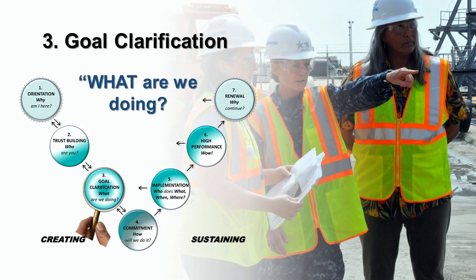Step 3: Goal Clarification. In Step 3, people ask, 'What are we doing?' which is a more specific question than the larger purpose question asked during orientation. During this stage of a team's life, clear understanding of the job is required, as well as agreements about goals and specific deliverables. Team members need to identify both the long and short-term goals of an organization and what they are trying to achieve together.